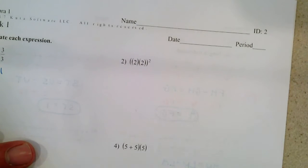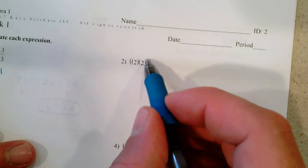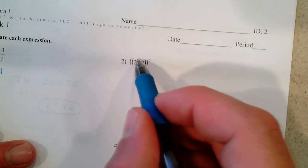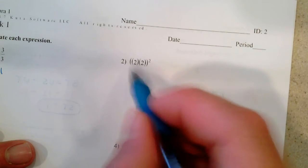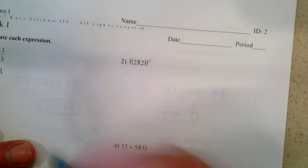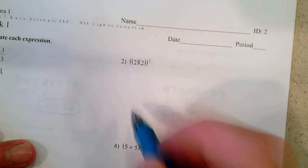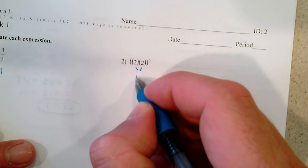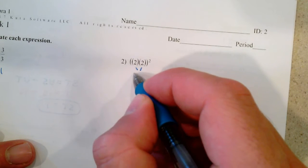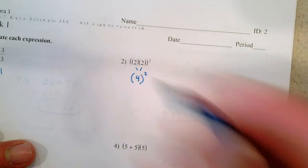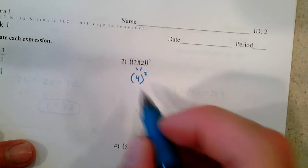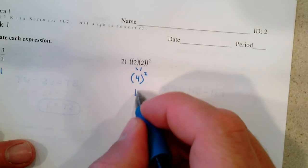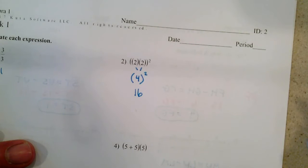Next door here, we've got some exponents. First of all, you notice we've got parentheses and then smaller parentheses inside. Whatever's inside the parentheses always gets done first. Inside these parentheses is 2 times 2, so that becomes 4. We still have the big parentheses out here and squared. Now we do the exponent. 4 squared is 4 times 4. That's 16.